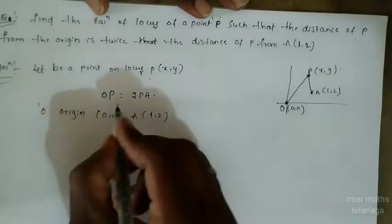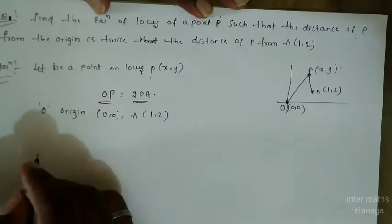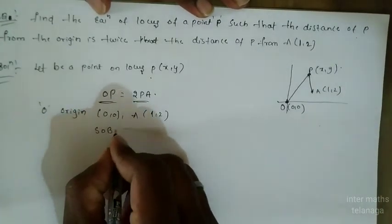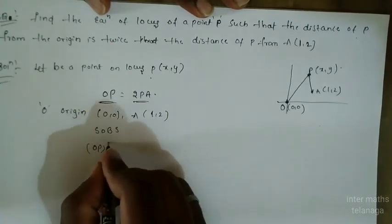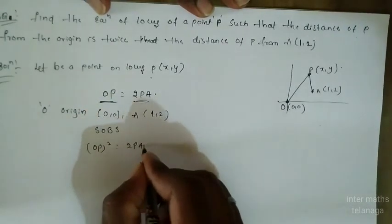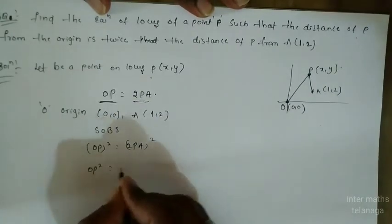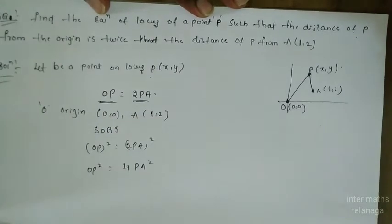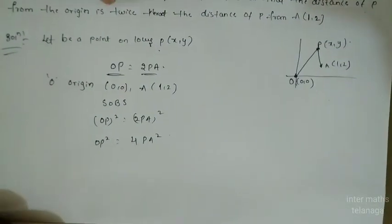Next, squaring on both sides: OP² = (2PA)², which means OP² = 4PA². Now we find out the distance using the distance formula.